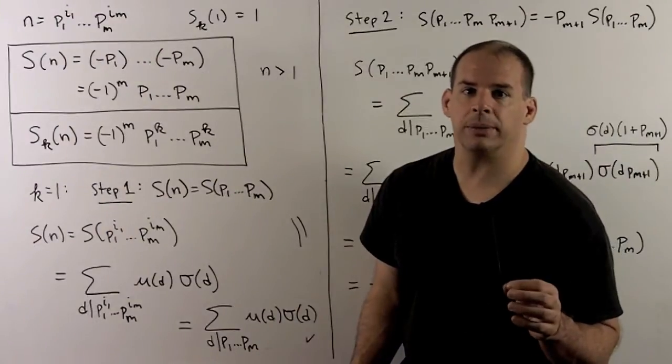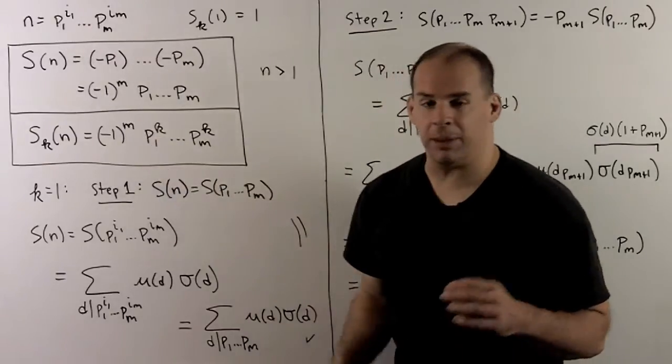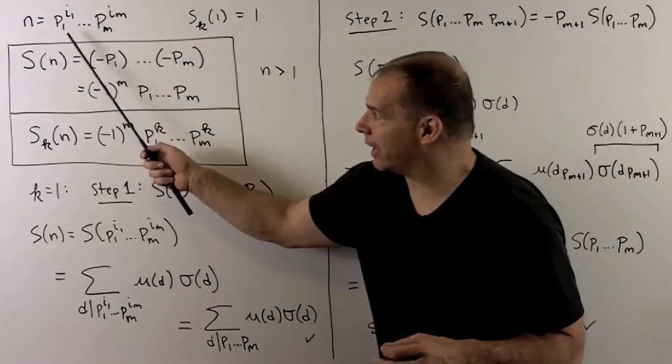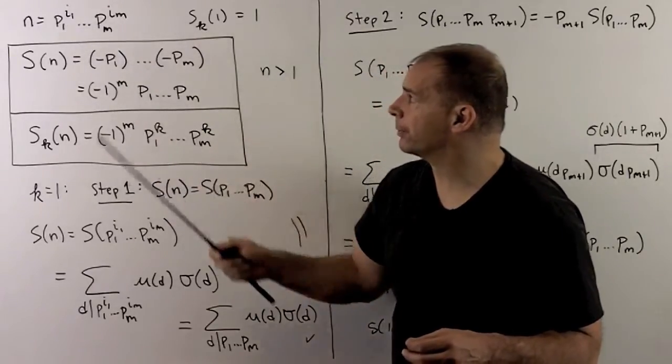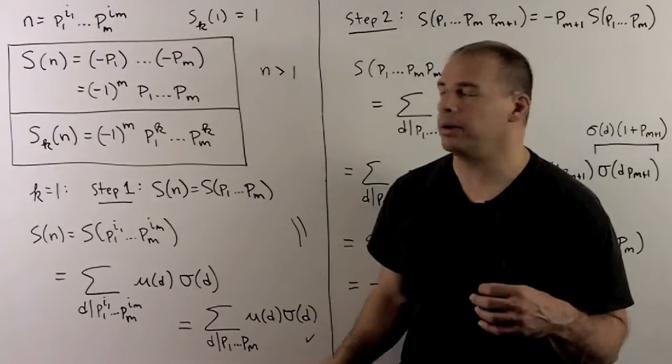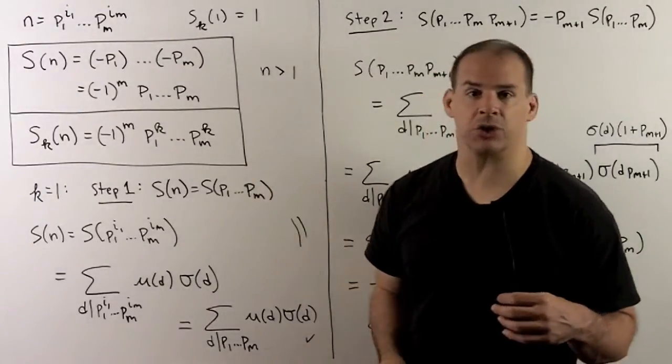Here's the answer. Pick any positive integer n. We take its prime factorization with m distinct prime factors. For any k, S of k of 1 is equal to 1. That's easy to check, straightforward.